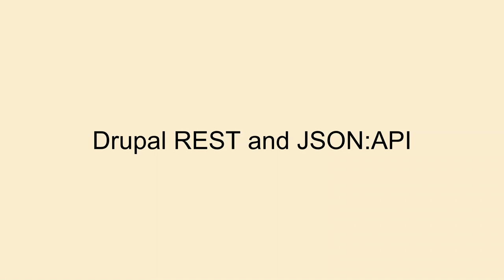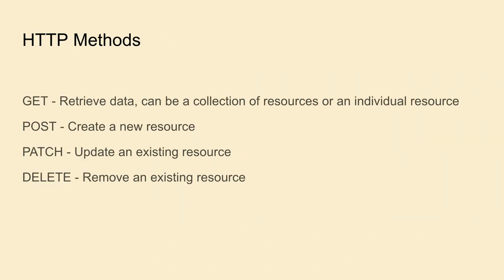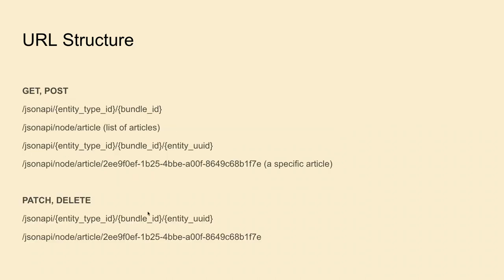To use Astro with Drupal, we can use REST API or JSON API. JSON API is recommended for delivering content because it's more powerful. REST is better for custom endpoints, login, or user creation. JSON API supports HTTP methods: GET, POST, PATCH, and DELETE, and follows a URL structure. You install the JSON API module, then specify the entity type ID and bundle ID. To get a list of articles, you call `/jsonapi/node/article`, which returns up to 50 articles. For a specific article, you append the entity UUID.